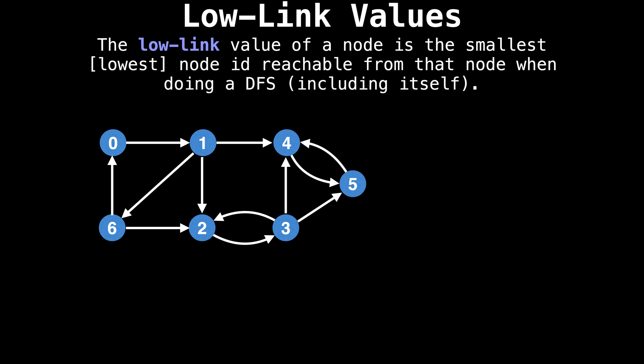Now that we're done labeling the nodes, inspect the graph and try and determine the low-link value for each node. The low-link value of a node is the smallest node ID reachable from that node including itself.